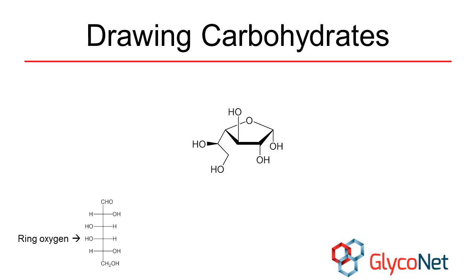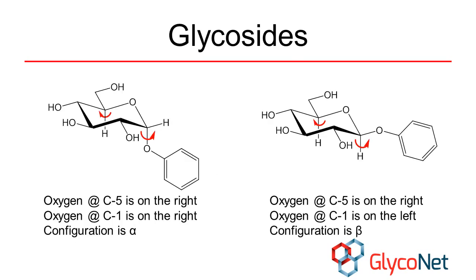Furanose sugars can be shown using Haworth projections. Glycosides are formed by attaching a molecule to carbon-1 through another atom, most often oxygen. This linkage can be in either an axial or an equatorial position, and to specify the type of linkage we need to compare carbon-1 with the chiral centre furthest away from it.